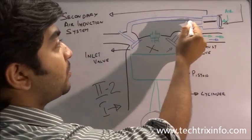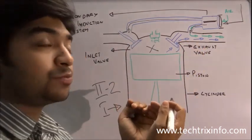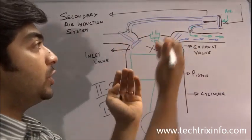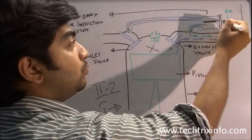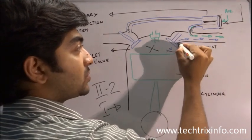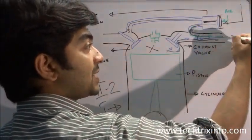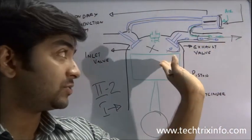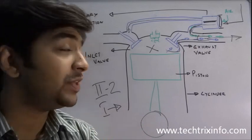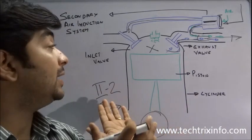The secondary air induction system works by pressure difference between the inlet valve and the exhaust valve. One port is connected toward the inlet valve and the other toward the exhaust valve. As these valves move simultaneously, a low pressure is created, and a suction force acts on the secondary air induction system. This causes the diaphragm to move, sucking in fresh air, which gets into the exhaust port and mixes with the exhaust. This reduces the percentage of pollutants to comply with Euro 2 standards.